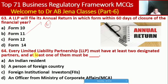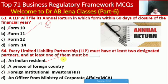Next MCQ: every LLP must have at least two designated partners and at least one of them must be what? Whether an Indian resident, a person of a foreign country, a foreign institutional investor (FII), or an officer from the Ministry of Corporate Affairs. Here A is the right option — at least one designated partner must be an Indian resident.